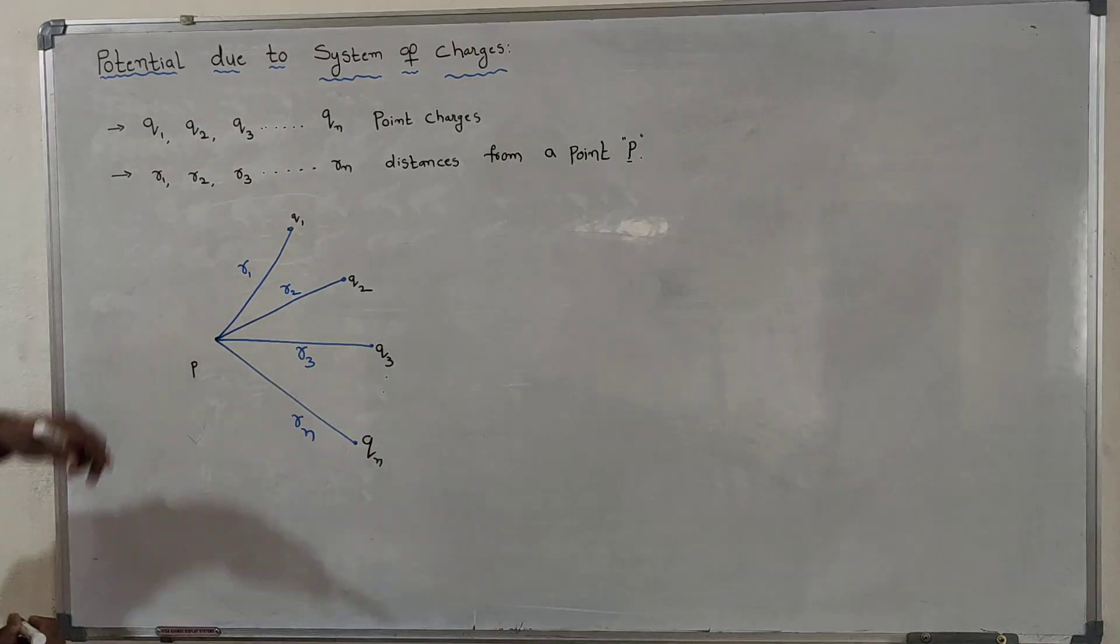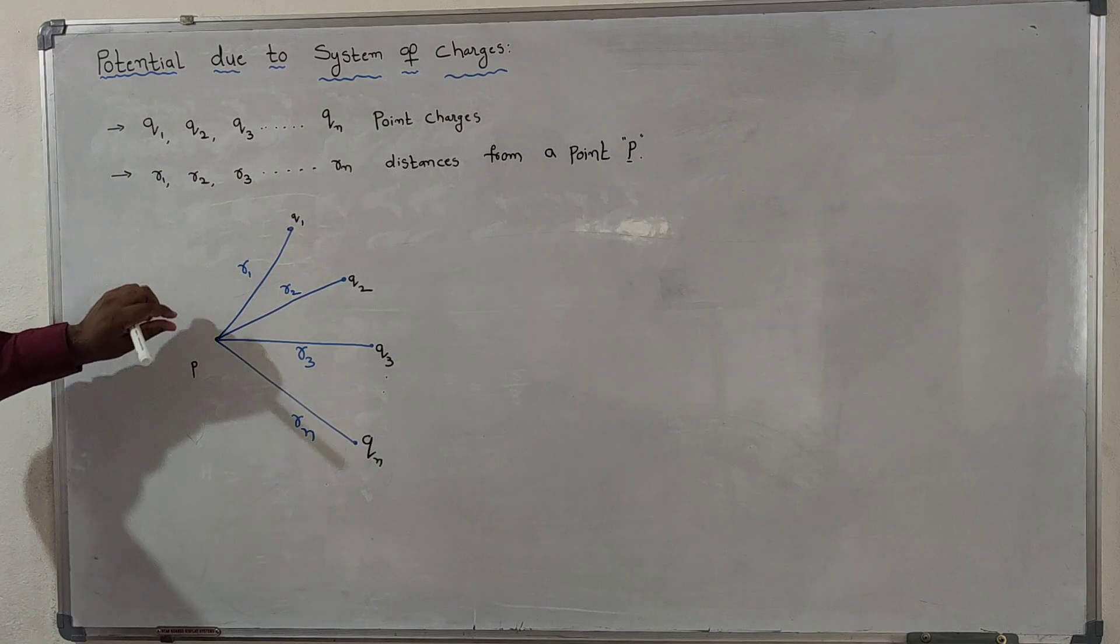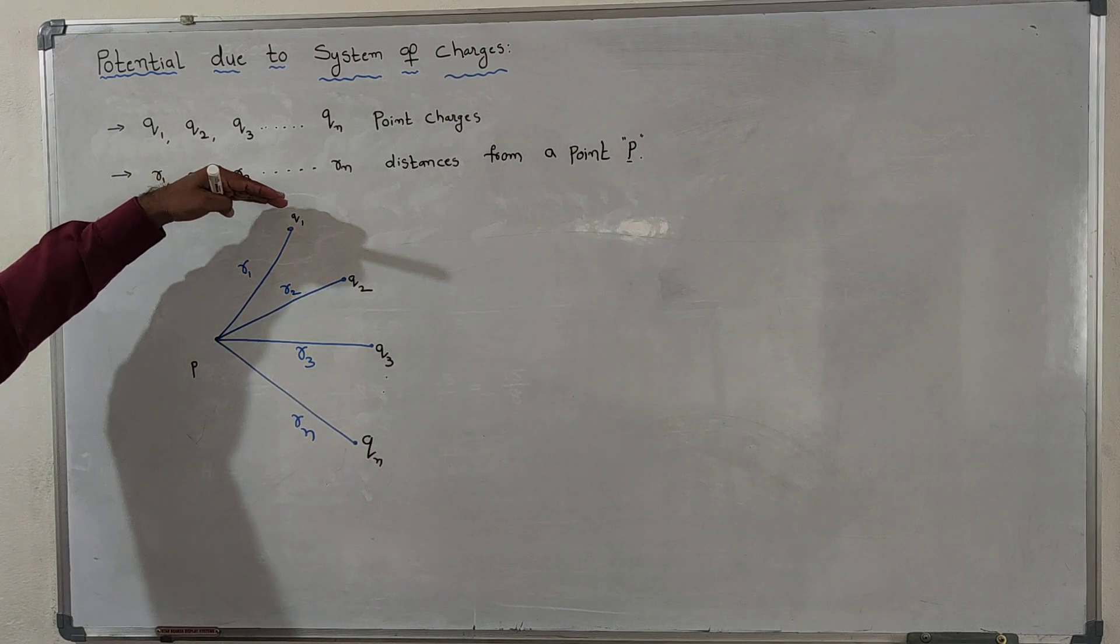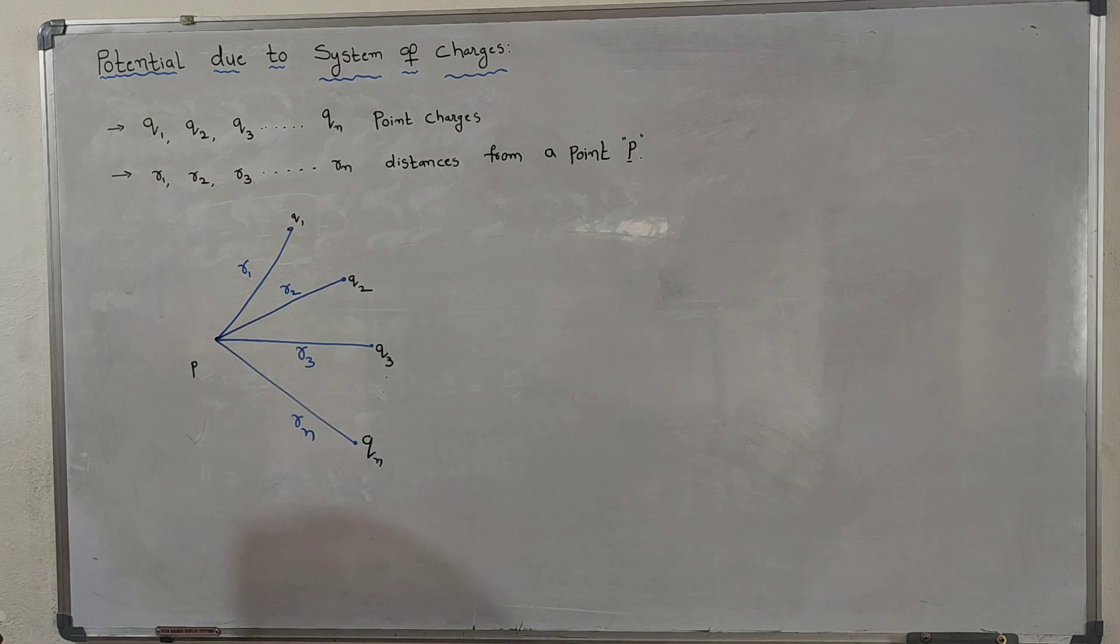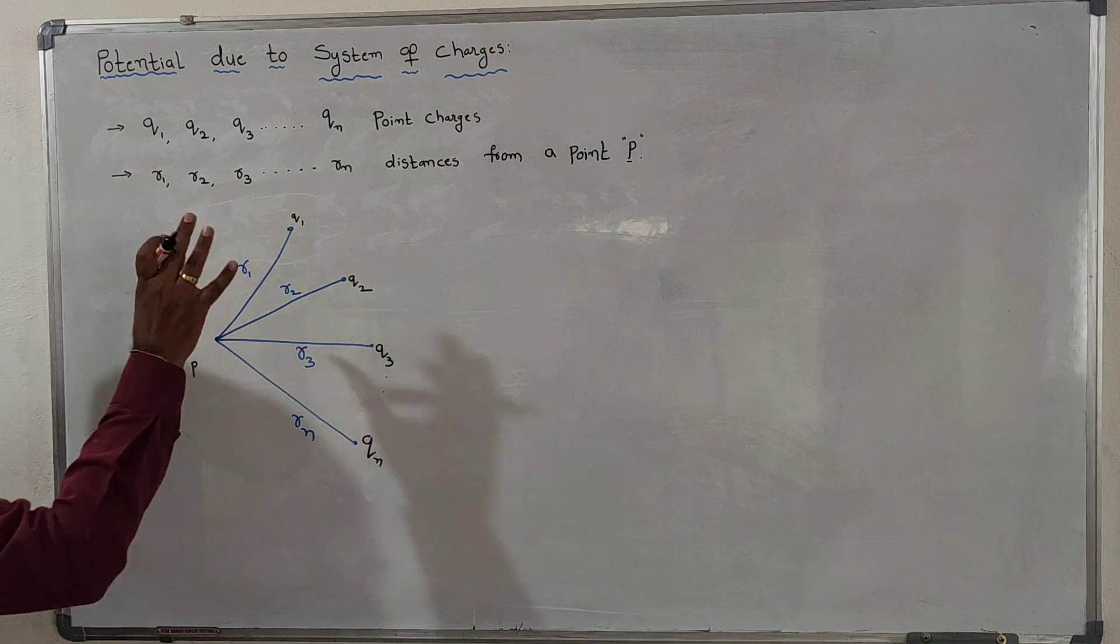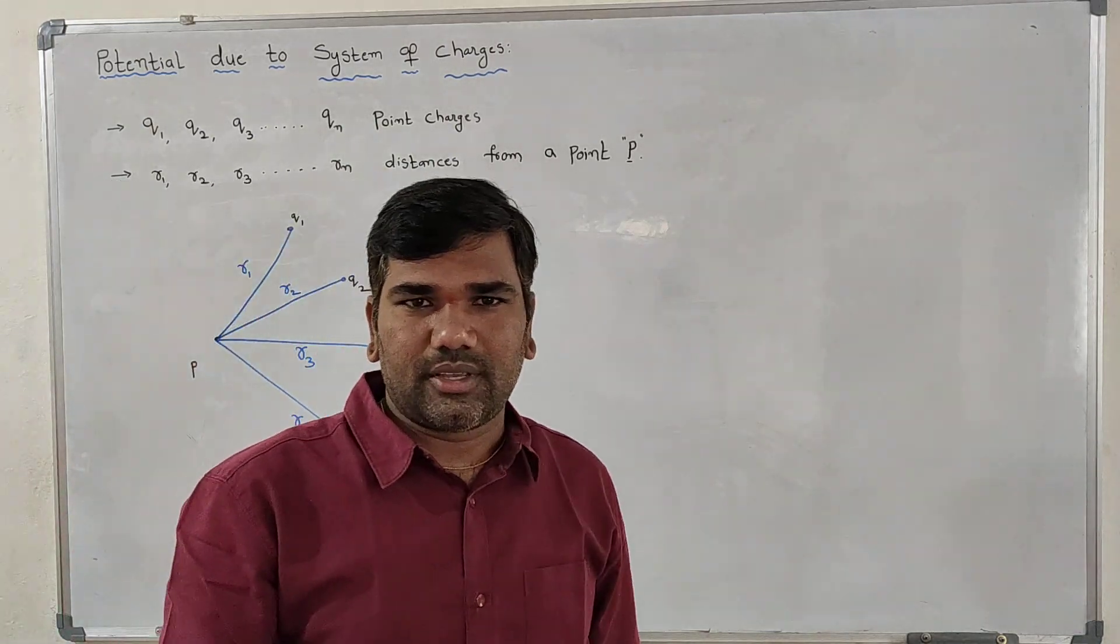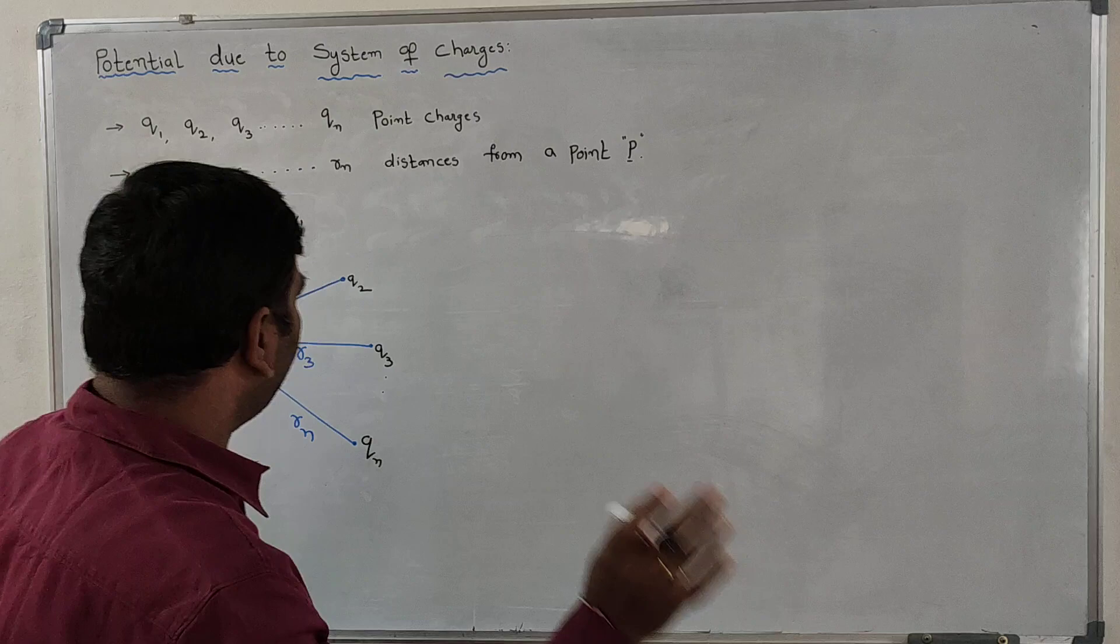We have to find potential at this point due to charge 1, charge 2, charge 3, and so on up to charge n. For that, let us consider individual charges, each charge individually.